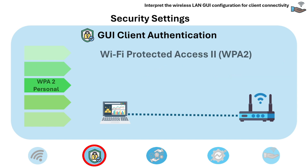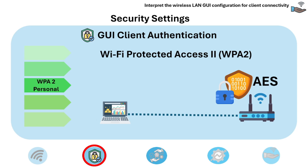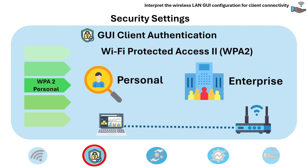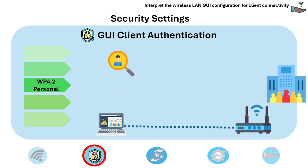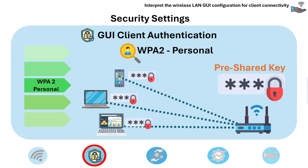The next method is WPA2, or Wi-Fi Protected Access 2. It was introduced as an improvement over WEP, utilizes stronger encryption algorithms like AES, and is the most commonly used protocol today. WPA2 offers two types of authentication: personal and enterprise mode. Personal mode, also known as pre-shared key or PSK, uses a single password for all users, making it suitable for home or small office networks.